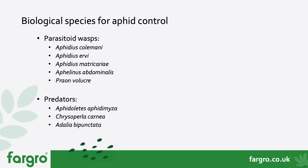Going through a list of biological species used for aphid control: for parasitoid wasps, I'll focus on Aphidius colemani and Aphidius ervi, while noting there are other Aphidius, Aphelinus, and Praon species used within programs of control. For predators, I'll look at Aphidoletes, Chrysoperla, and Adalia, which attack the host externally, and how we can integrate these species alongside each other for comprehensive aphid control.